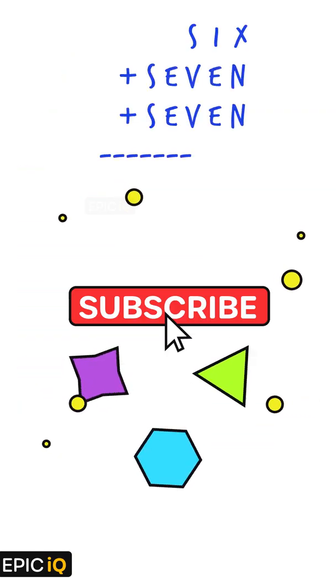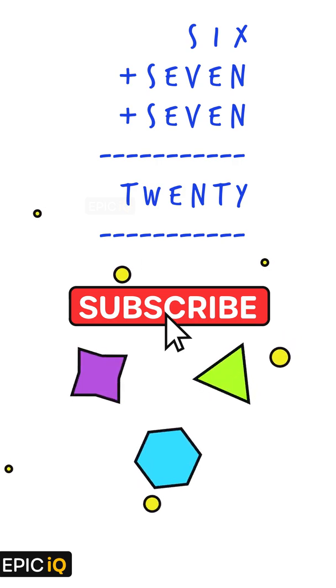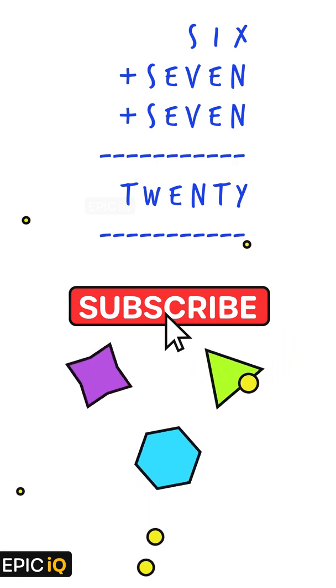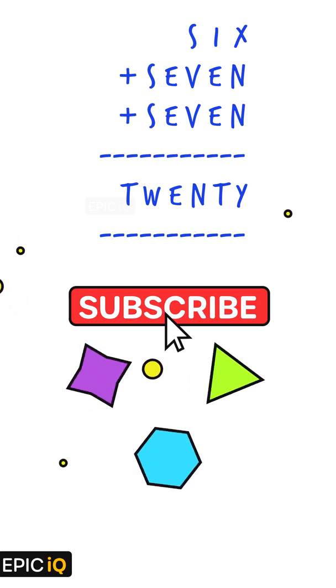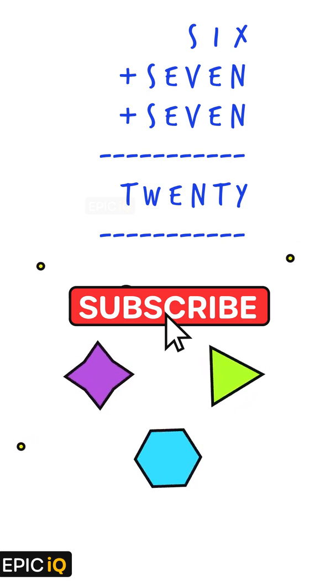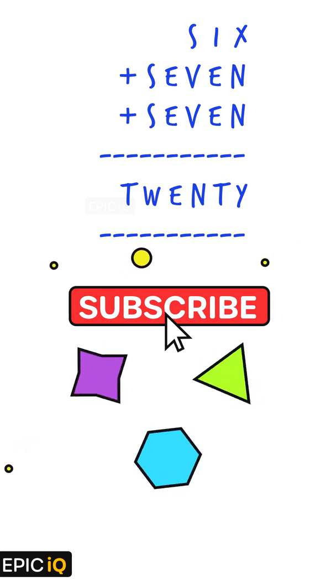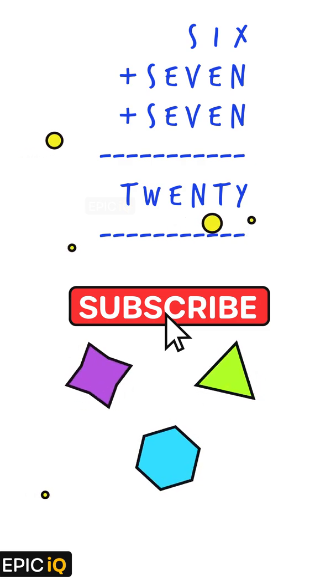Hope you enjoyed solving these two verbal arithmetic problems. Here, I'll leave you with a tough one. The puzzle is 6 plus 7 plus 7 is equal to 20. It took me a while to solve this. Can you solve it? Don't forget to share your answers in the comment section.